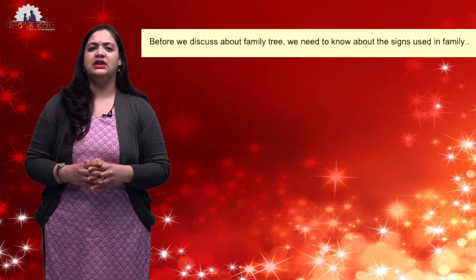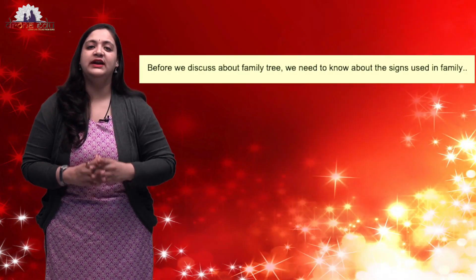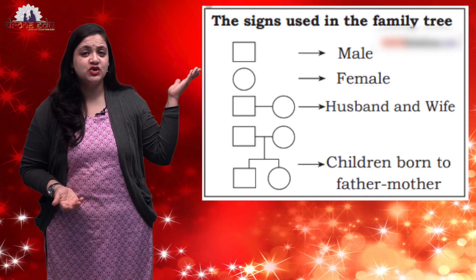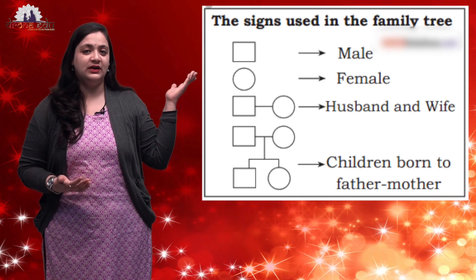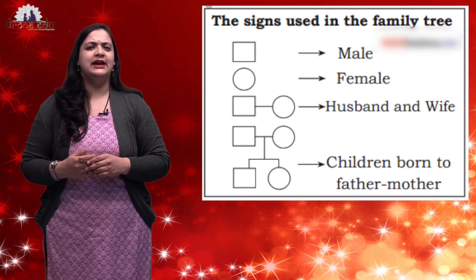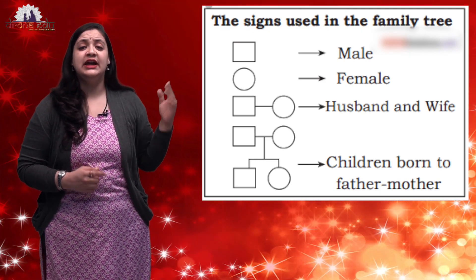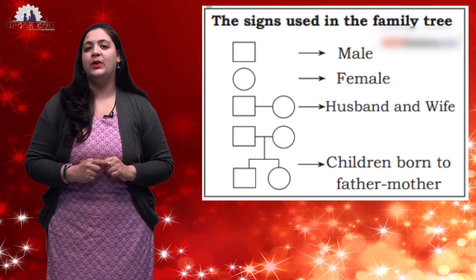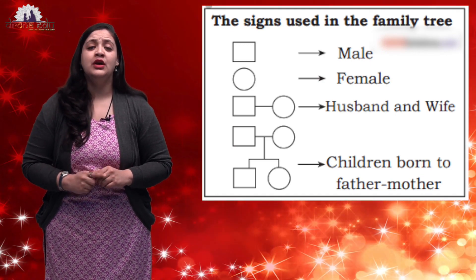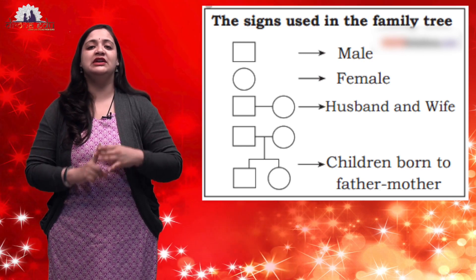Before learning the family tree, we will see what are the major signs involved in it. By identifying each of the signs, you can easily get to know what type of member of the family it represents. So what is the first sign? The first sign you can see is a square. This square refers to the male gender of the family — for example, your uncle, grandfather, father, and brother all come under this particular square.